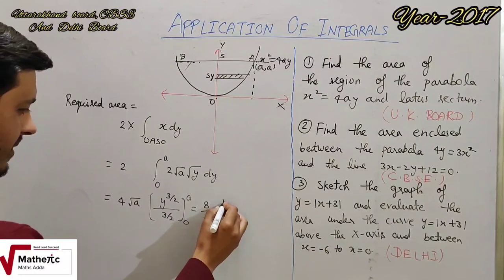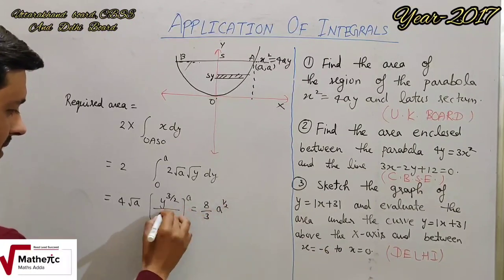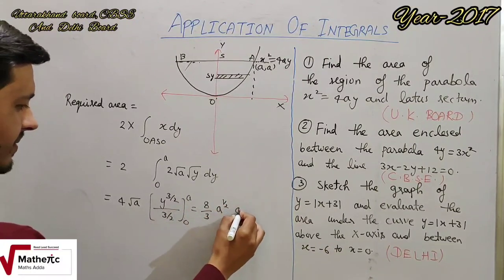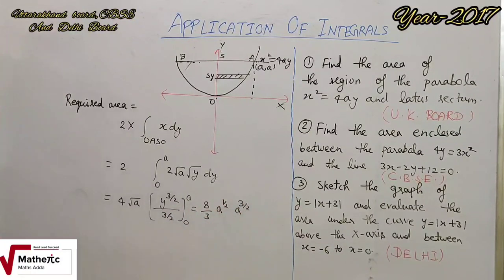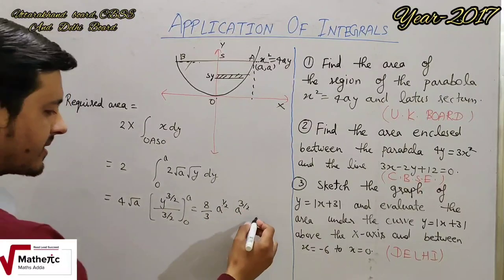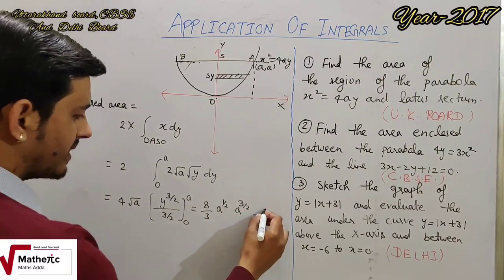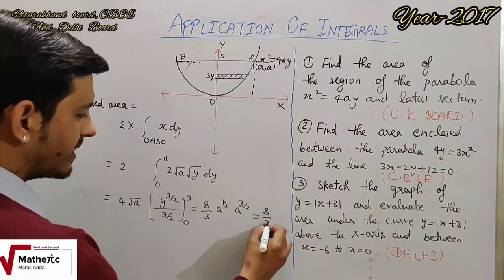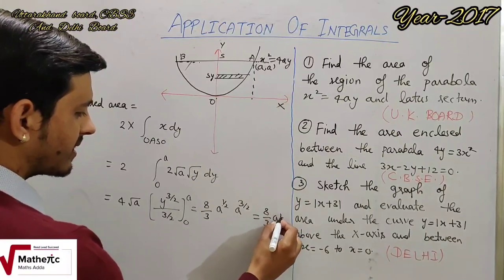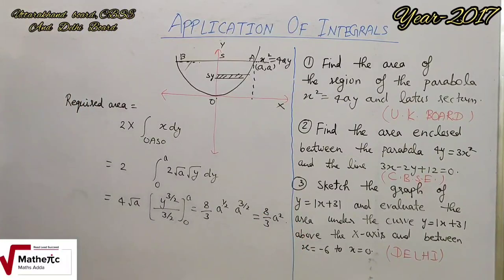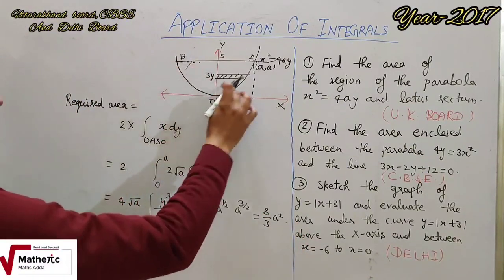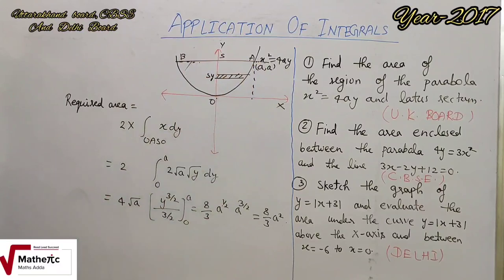a^(1/2) और limit लगाने पर a^(3/2) और 1/2 add होकर 4/2 = 2 हो जाएगा, तो 8/3 · a² square units। इस पूरे portion का area हो जाएगा।